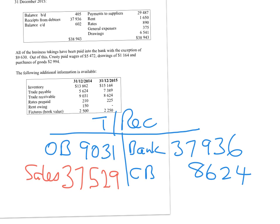That 37,529 is only our credit sales, since this is a trade receivable account. To get the correct total sales for the income statement, we also need to add any cash sales. Looking at the additional information section numbered two, it states that all business takings have been paid into the bank with the exception of 9,630.